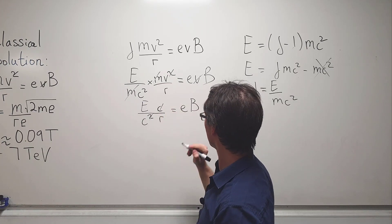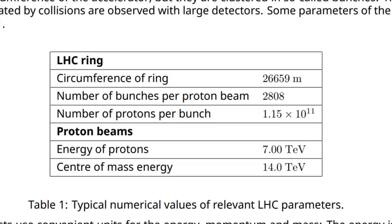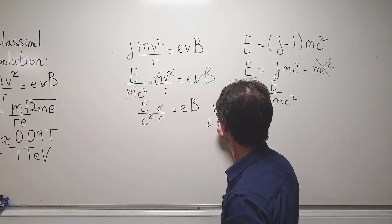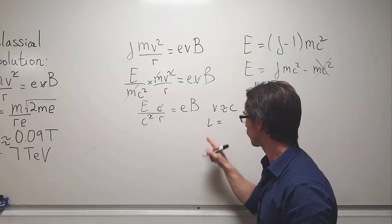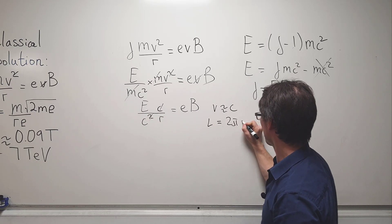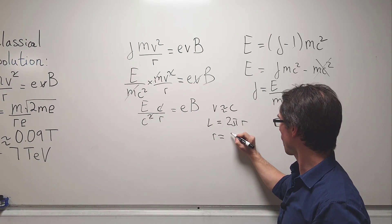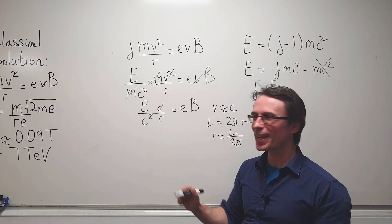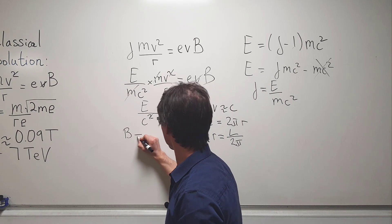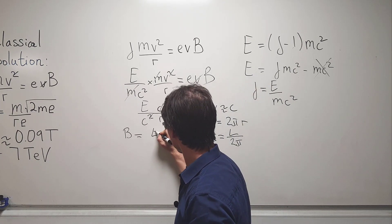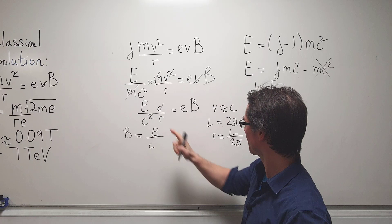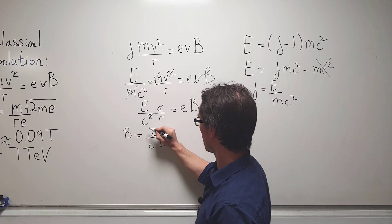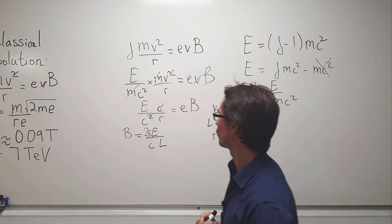Those will cancel out. Because we're not given the radius but the actual circumference of the ring, what I'm going to do is express this in terms of the circumference. So l will be equal to 2 pi r, and then the radius r will just be equal to the circumference divided by 2 pi. We can rearrange for b, and what we're going to get is e divided by c, and then rather than r I'm going to write l over 2 pi, which is going to give me l here and then a factor of 2 pi.